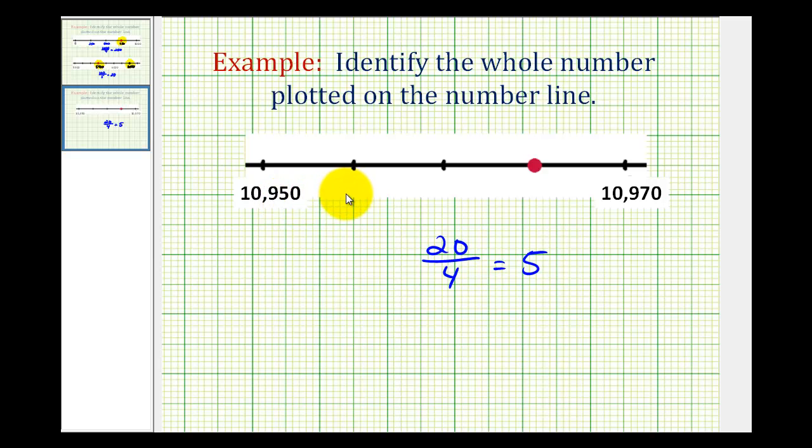So here we'd have 10,955, here we'd have 10,960, and here we have 10,965. So 10,965 is the whole number plotted on this number line.